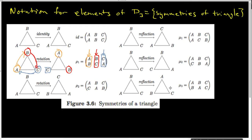I would encourage you to stop the video and try to sort out exactly why each of these permutations is given by the two-row notation that the author indicates. And then if you get confused, start the video again and see how I wind up justifying the two-row notation for each particular one.